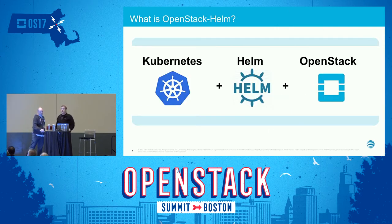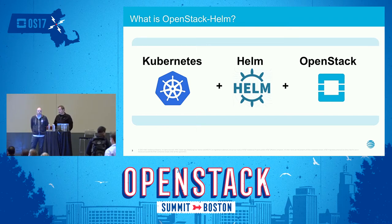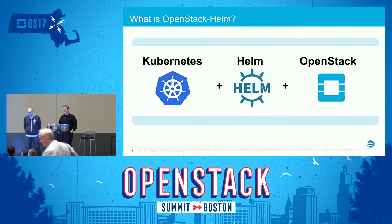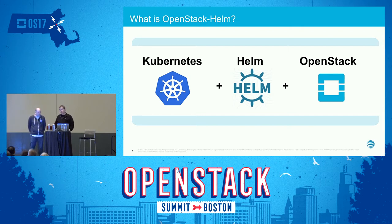That brings us to what OpenStack Helm is — it's essentially a marriage of Kubernetes, Helm, and OpenStack. This OpenStack project seeks to create Helm charts for each OpenStack service, providing complete lifecycle management. The goal is to provide a framework allowing you to deploy, update, maintain, and operate a fully functioning OpenStack environment for both simple and complex environments.